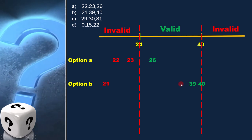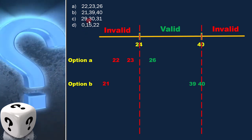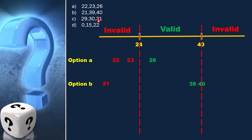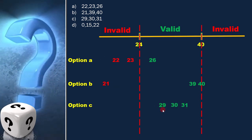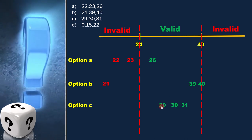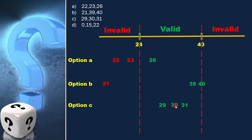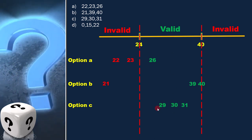Next option is 29, 30, and 31, and we can place them here, like this. And we can see that all the numbers are in the valid range. So, this is the correct answer.